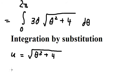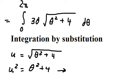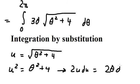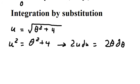We let u equal the square root of θ² plus 4. Squaring both sides gives u² = θ² + 4. Taking the derivative of both sides gives u·du = 2θ·dθ, and dividing both sides by 2 gives us the substitution for θ·dθ.